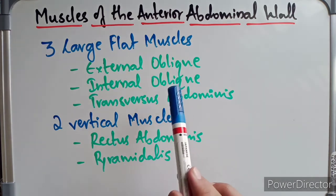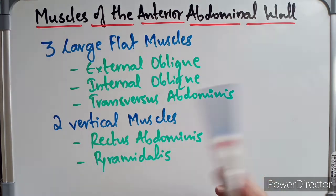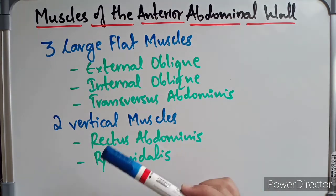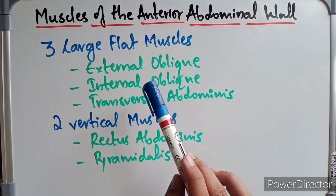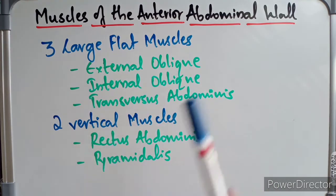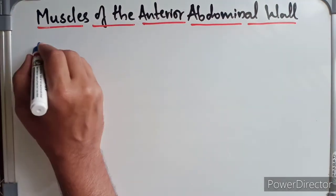The three flat muscles are fleshy posterolaterally — on the posterior side they are fleshy, and on the anterior side they turn into aponeurosis. We are going to discuss each muscle one by one, starting with the external oblique muscle.